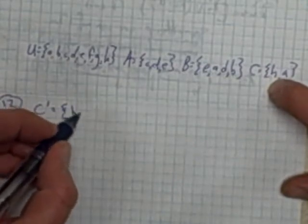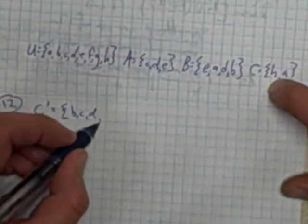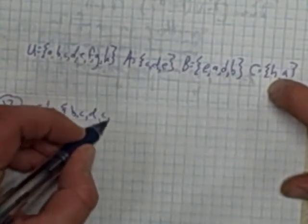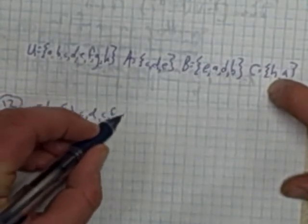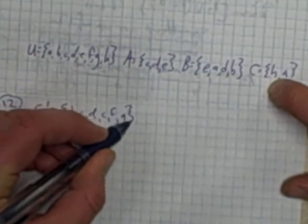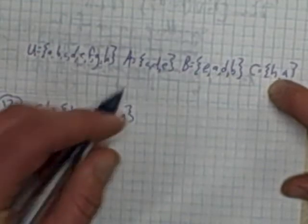So the complement of C is: B, C, D, E, F, and G. And that's the complement.